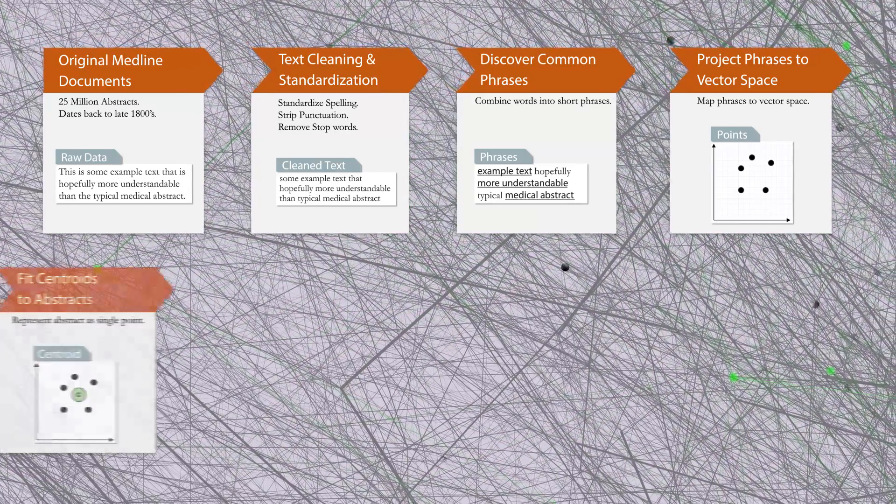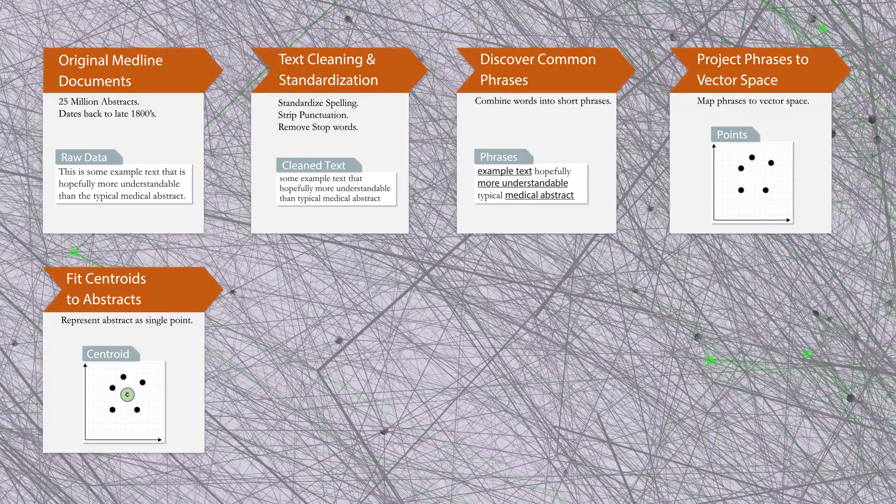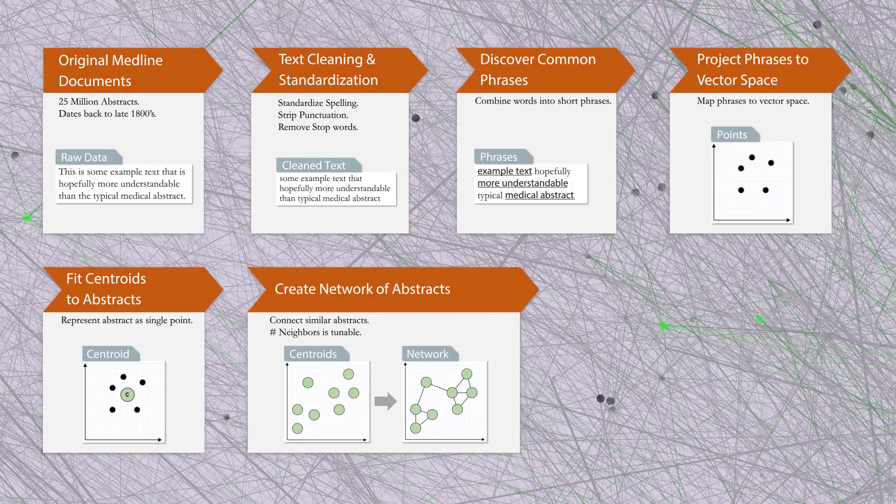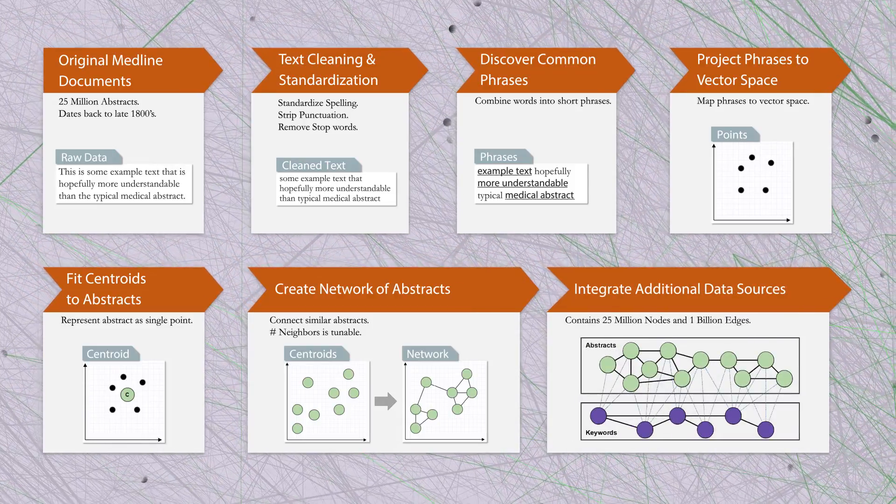From there, we can fit a centroid for each abstract. Once complete, we create a nearest neighbor's network of abstracts. We lastly integrate the universal medical language system keyword network to result in the Moliere knowledge net.